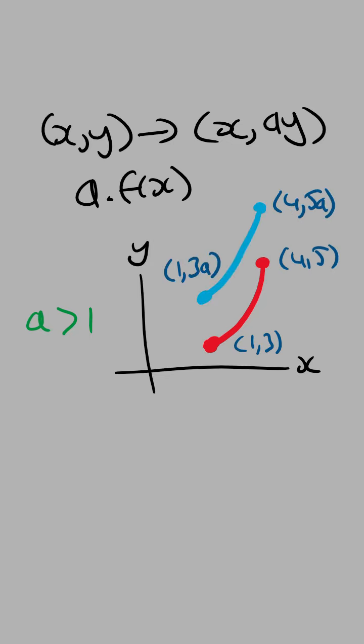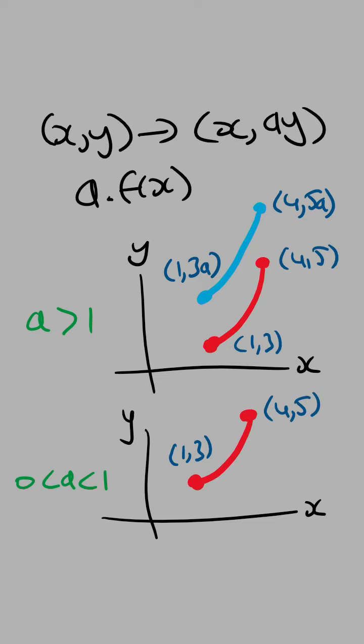And if the value of a is between 0 and 1, then the graph is going to be pulled towards the x-axis. In other words, the y-coordinates are going to become smaller while the x-coordinates remain the same.